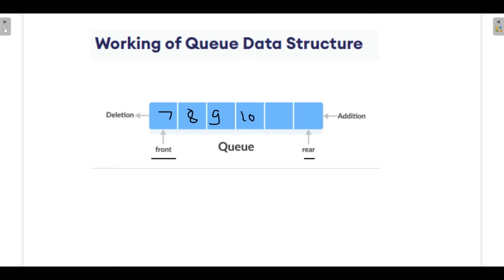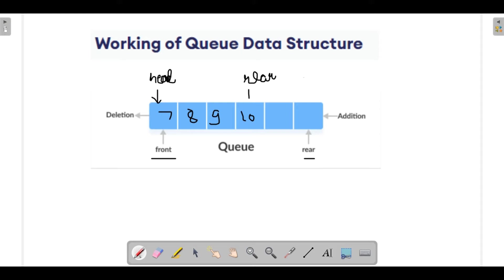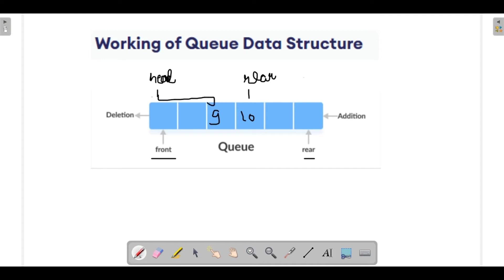For example, if we are adding elements like 9 and 10, we have two reference variables: one is head and the other is rear. Deletions from head means the element at the front is removed and head moves forward. Similarly, additions occur from the rear end — if we add 20, it goes to the rear and the new rear pointer updates accordingly. This is how your queue works.